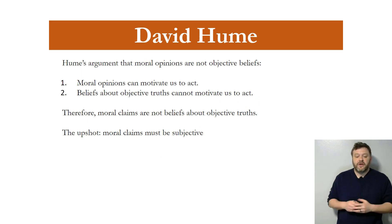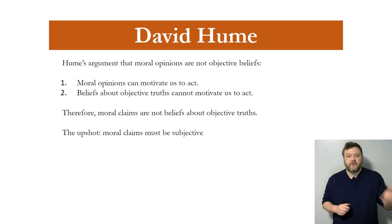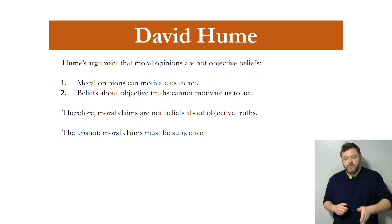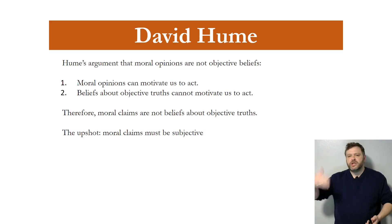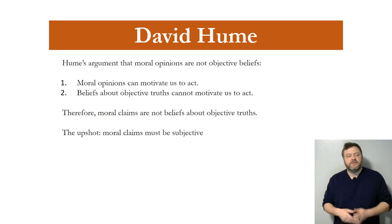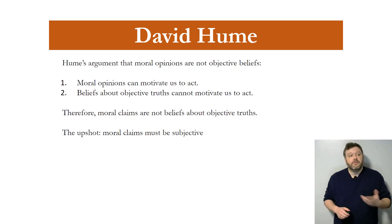Here is Hume's second argument. Premise one: moral opinions can motivate us to act — and in fact they do, according to his theory of action. But belief states that are just about objective truth don't motivate us to act. Since moral claims do motivate us, but pure rationality or belief states do not, moral claims can't be those belief states — they have to be something like a passion or desire. You can see how tightly that connects to an idea like emotivism.